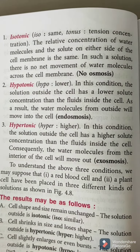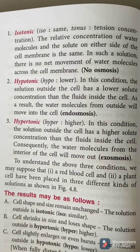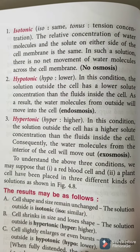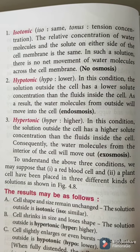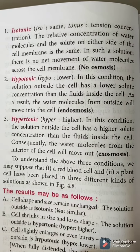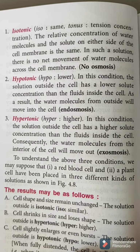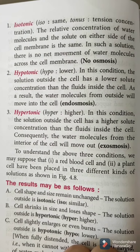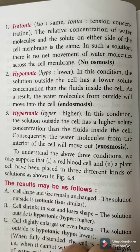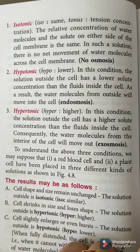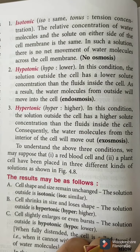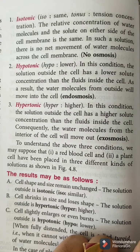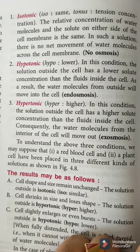First, isotonic solution. Here we compare the concentration of our solution with the cell sap of the plant cell — cell sap is the solution present inside the cell. If the concentration of our solution and the cell sap are equal, the solution is called isotonic. When a plant cell is kept in an isotonic solution, there will be no osmosis because water molecules are equal on both sides.